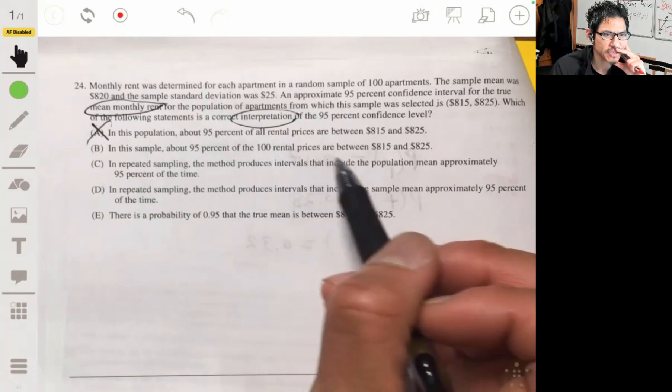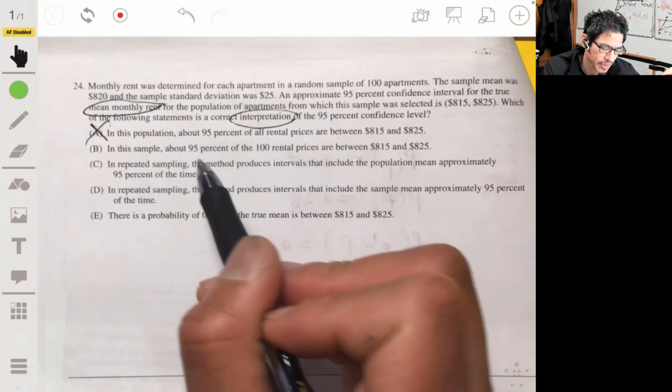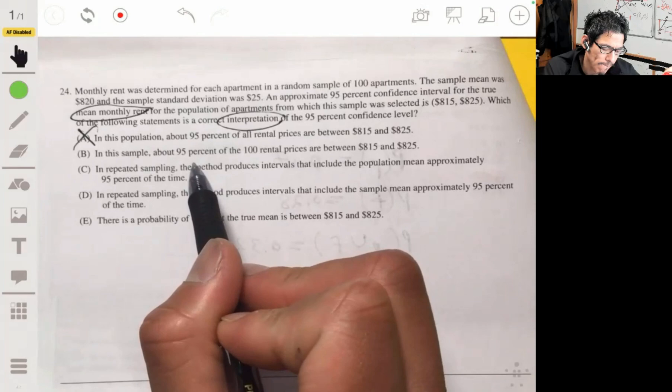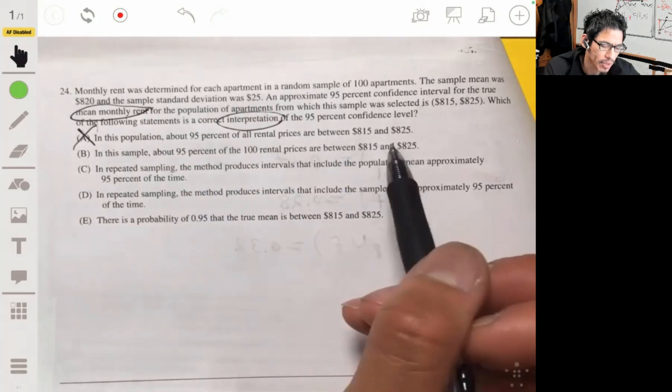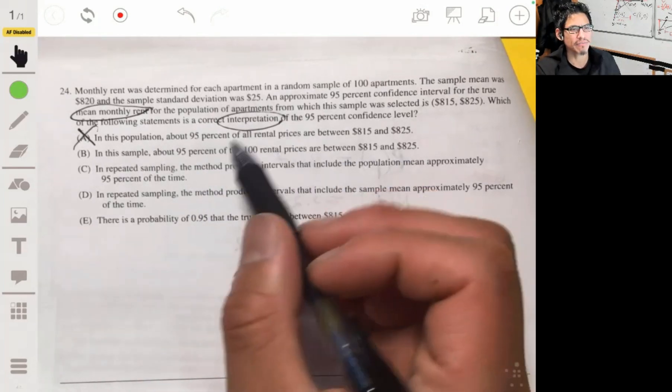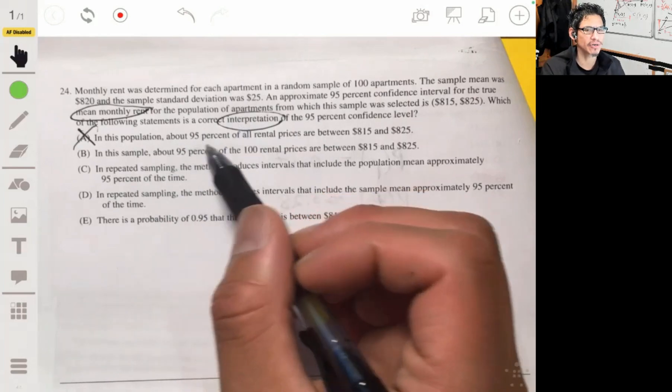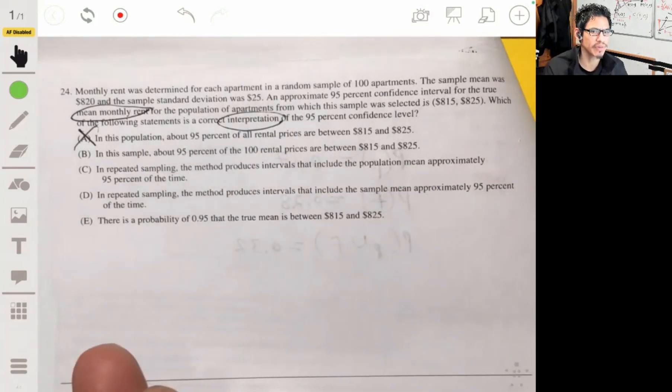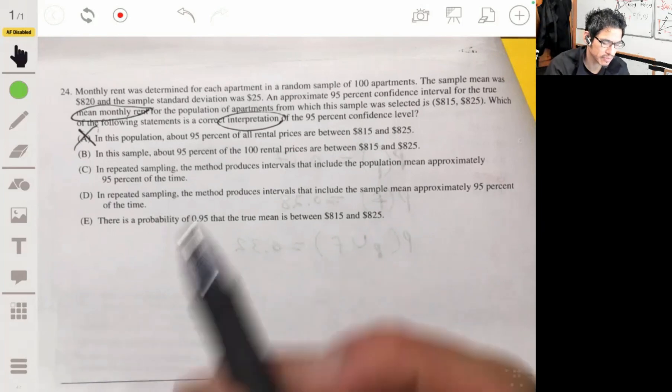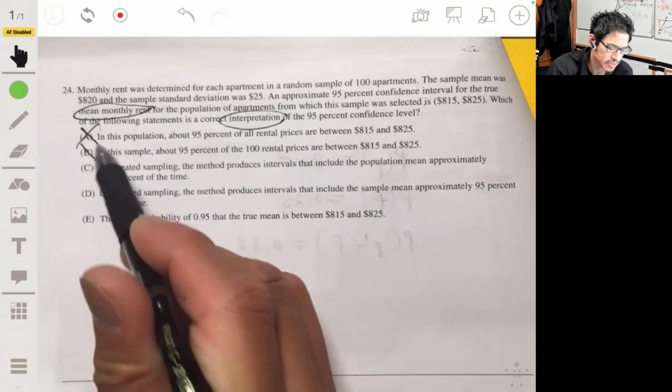No, because we're trying to find the mean, we're trying to find the mean monthly rent. We're not trying to find an interval. In this sample, about 95% of the rental prices are between. Now, this may be true, but this doesn't, who cares? That's not, of course, we're going to know what occurs in a sample. We don't care necessarily about what the proportions are in the sample. We care about being able to apply those to the population. So even though B could be true, it's not useful.